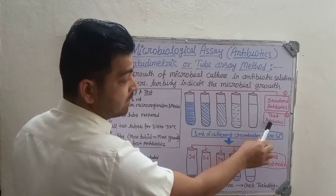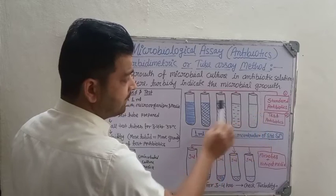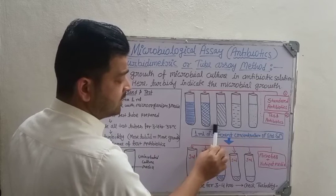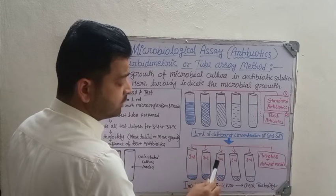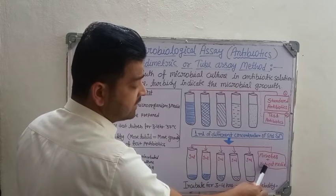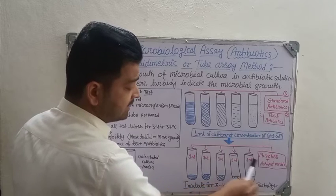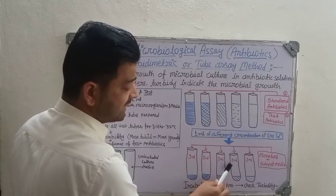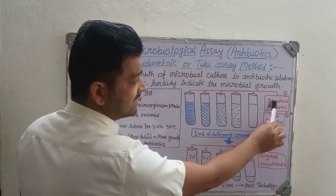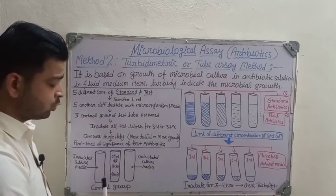The same procedure is repeated for the test antibiotic, because we need to compare the test antibiotic against the standard. The test antibiotic is also prepared in five different concentrations, and 1 ml of each is transferred into five new test tubes already containing 9 ml of nutrient media and microorganism — making a total of 10 ml each.